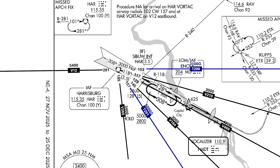When you join an initial approach segment from an airway, you're not going to fly to an intersection — the Harrisburg VOR in this case — stop on a dime, and then follow the next course exactly. You're either going to overshoot or undershoot. Obstacle protection is provided, but often only if the course change is 120 degrees or less.